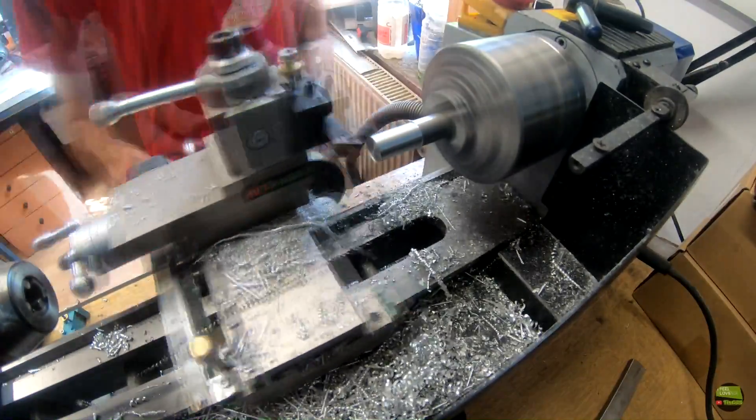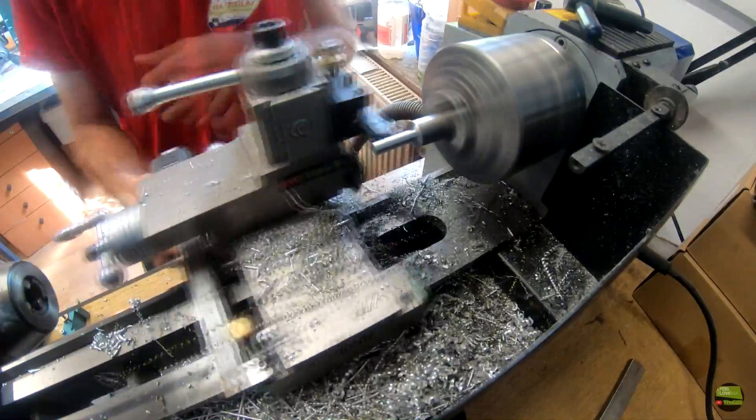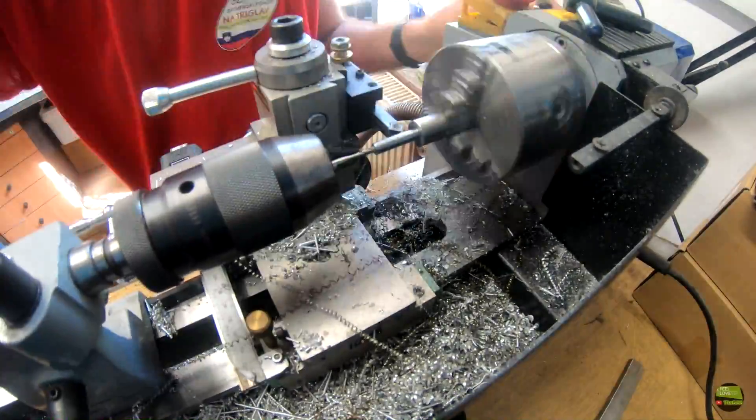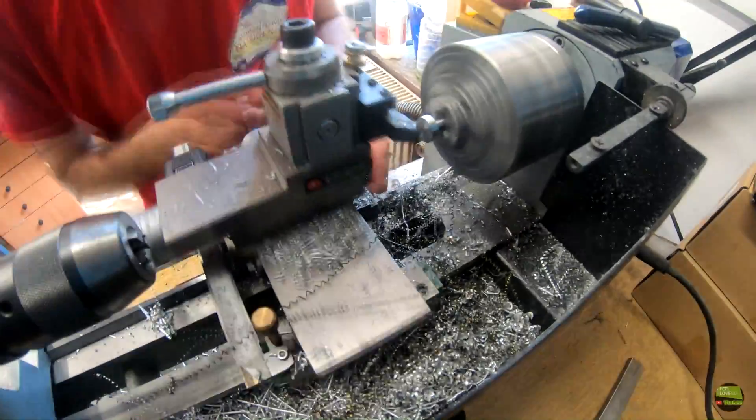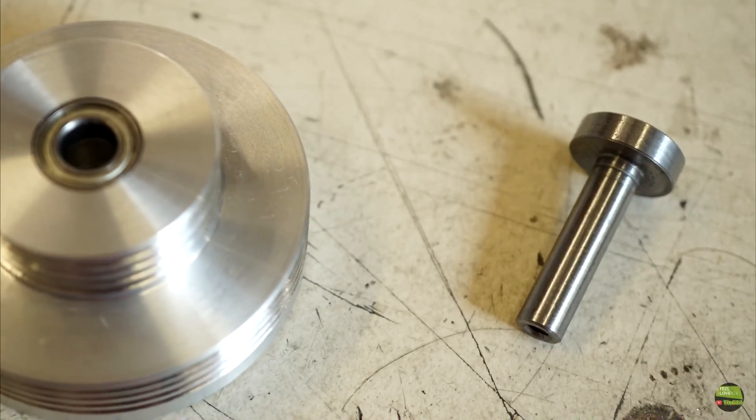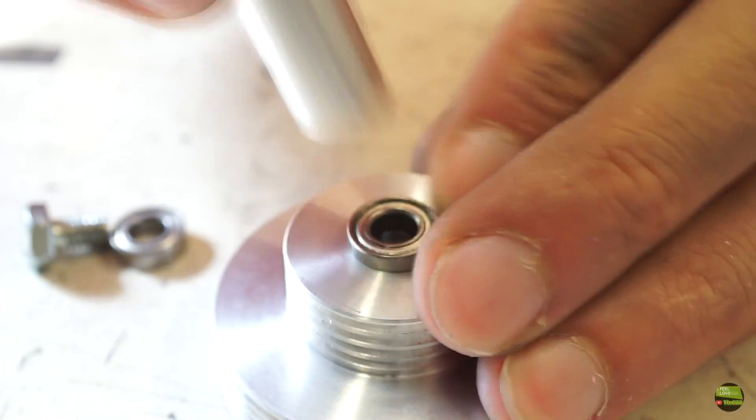There's one more part I need to make before assembly: steel axis for the wheel. Now I can insert the bearing into the wheel and mark the location to make a hole from it on the axle.